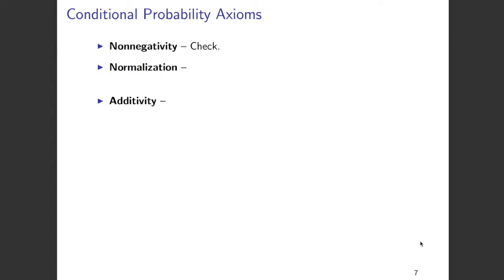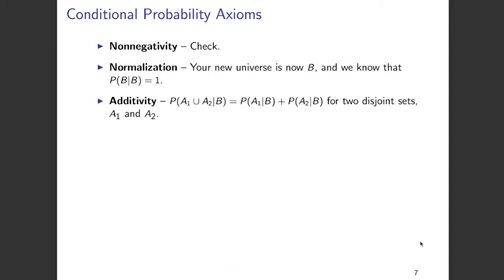Conditional probability is a probability, so its value must lie between 0 and 1, and there is a non-negativity requirement — it cannot be negative. We are normalizing with the new universe B, so we know P(B|B) = 1. The new universe is now B, because that is what we use in the denominator to find the conditional probability of A given B. There is another axiom called the additivity axiom: if A1 and A2 are two disjoint events, then P(A1 ∪ A2 | B) = P(A1|B) + P(A2|B).